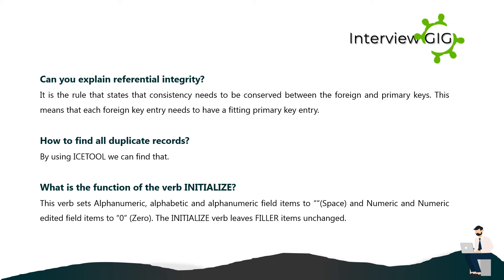Can you explain referential integrity? It is the rule that states that consistency needs to be maintained between foreign and primary keys. This means that each foreign key entry needs to have a matching primary key entry. How to find all duplicate records? By using the ICETOOL, we can find duplicates. What is the function of the verb INITIALIZE? This verb sets alphanumeric, alphabetic, and alphanumeric-edited field items to spaces, and numeric and numeric-edited field items to zero. The INITIALIZE verb leaves FILLER items unchanged.